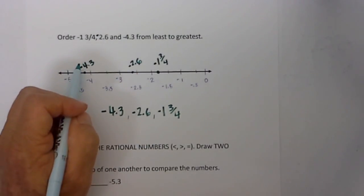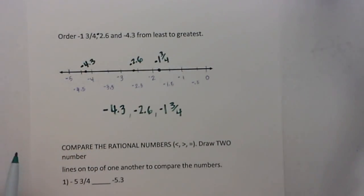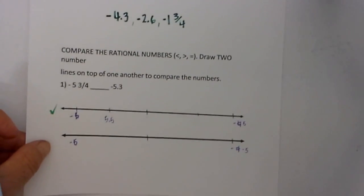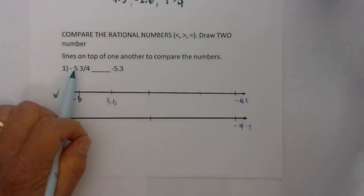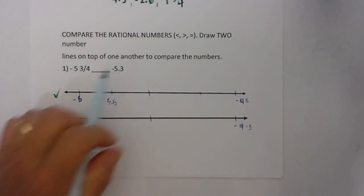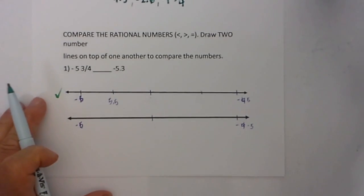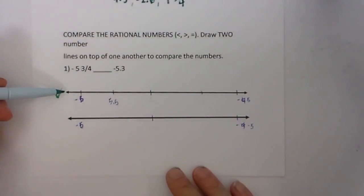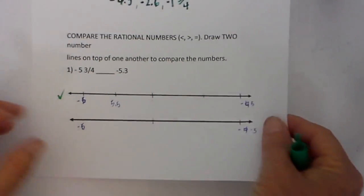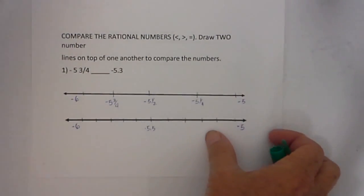And finally, what if you have a number like this: you have negative 5 and 3 fourths and negative 5 and a third. So how do we determine which one is smaller or larger? What you can do is create two number lines, and then compare them. Let me set up the example and I think it will make sense to you.